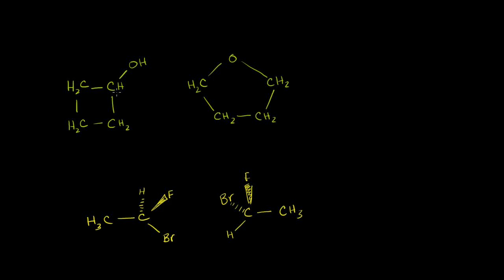But if we look a little bit closer, the molecule on the left has four carbons, and so does the one on the right. The left has eight hydrogens, and the right also has eight hydrogens, and they both have one oxygen. So both molecular formulas are C4H8O. They have the same molecular formula — they're made up of the same thing.